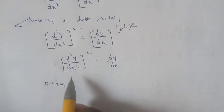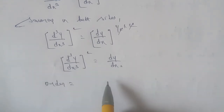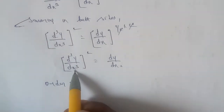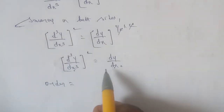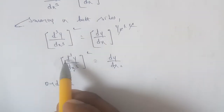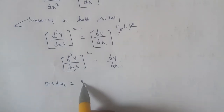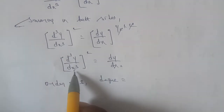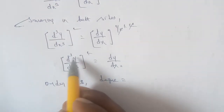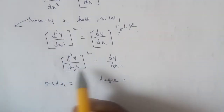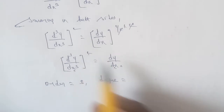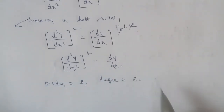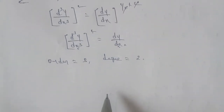After squaring both sides for sub-question 6, the highest order derivative is d³y/dx³ with power 2. So the order is 3 and the degree is 2.